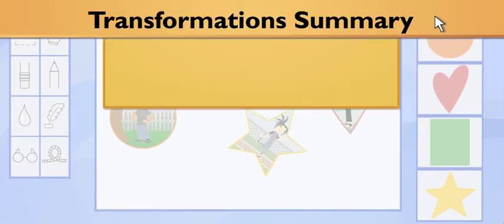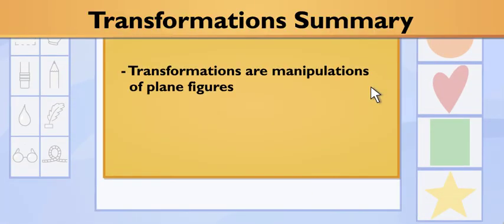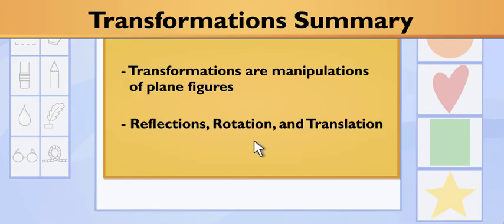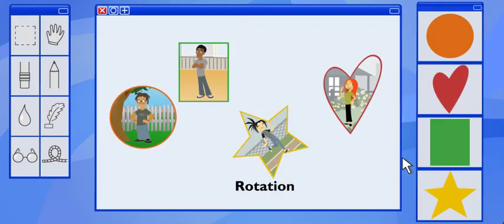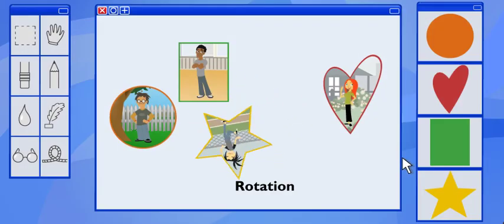Using transformations, I manipulated the plane figures in my pictures. We discussed three different types of transformations, and I used all three. Rotation to rotate that star pic and turn it around a given point.